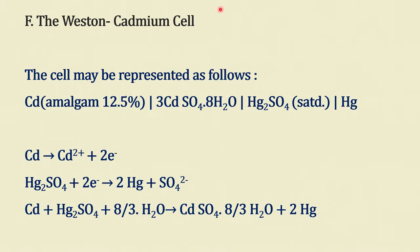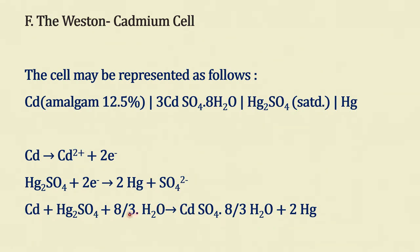The Weston cadmium cell is also a very standard battery. It is represented as: cadmium amalgam (12.5%) as anode | cadmium sulfate electrolyte || H₂SO₄ | mercury anode. The reactions: mercury with H₂SO₄ gives Hg, and cadmium goes to cadmium sulfate as the product.